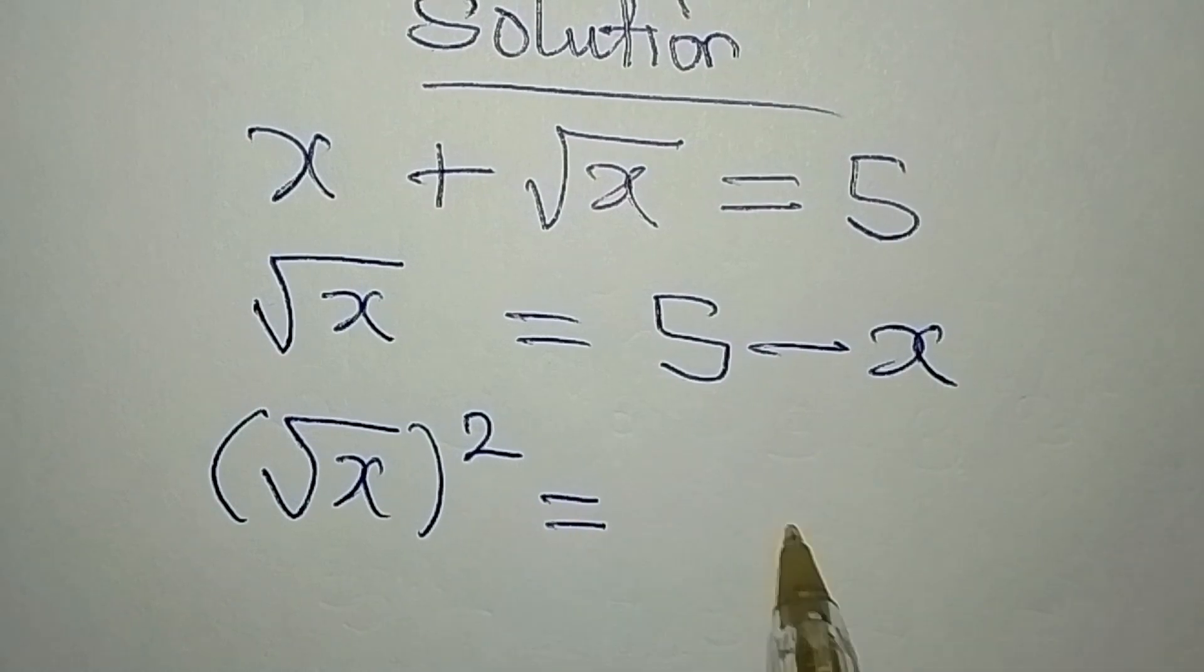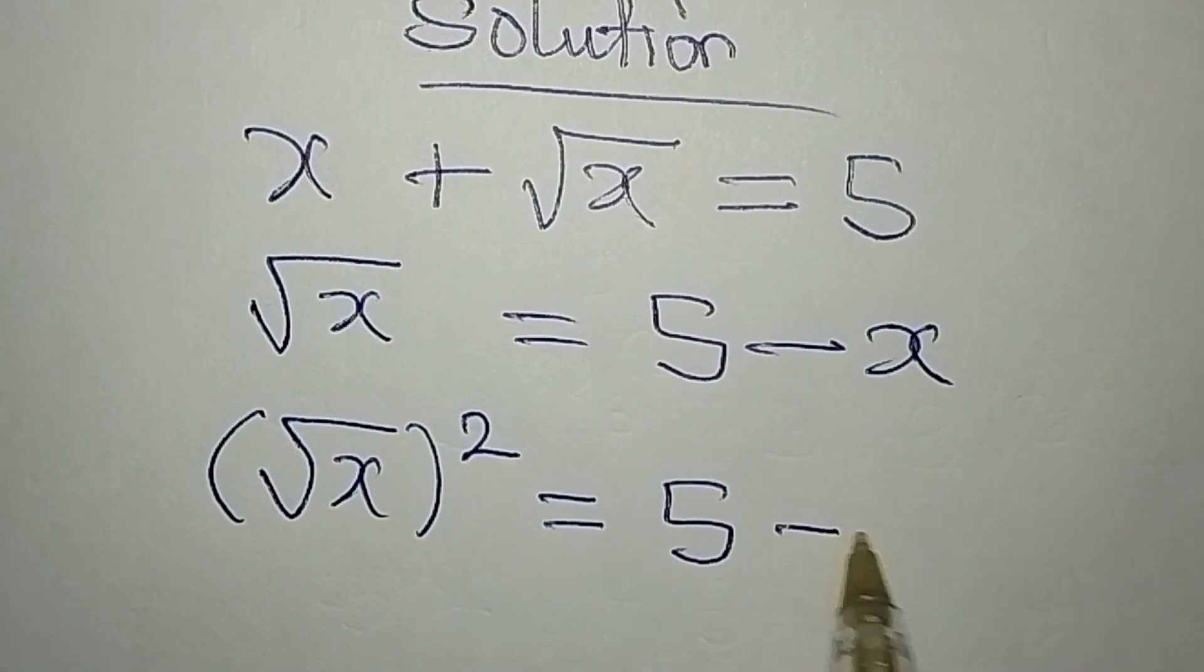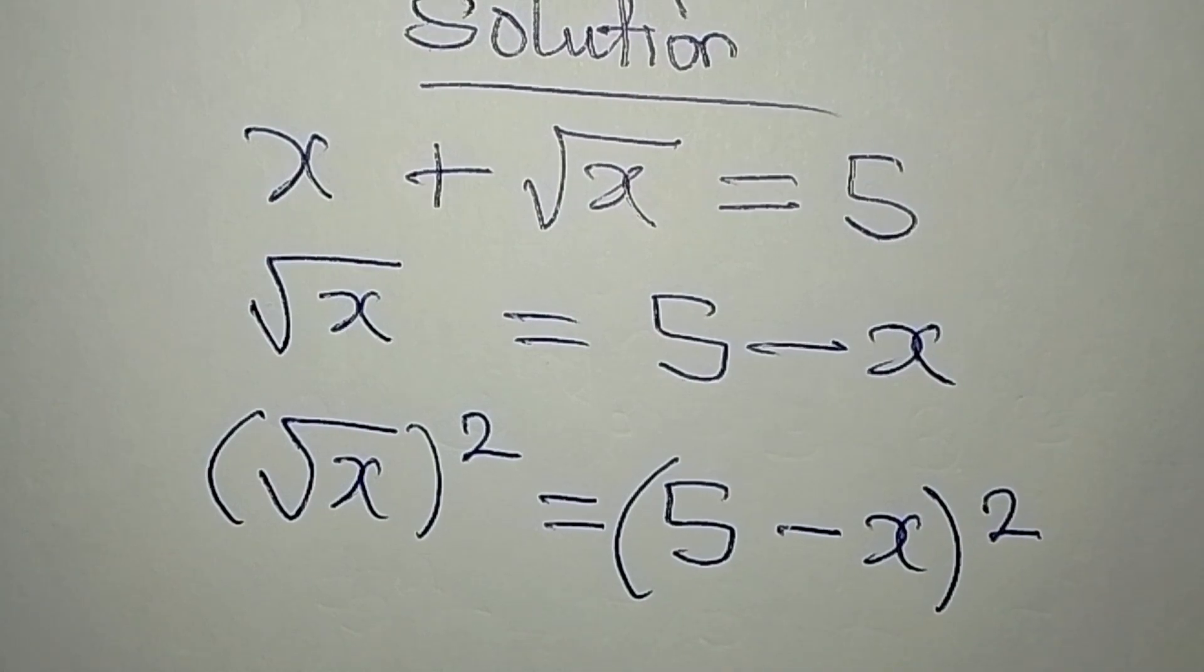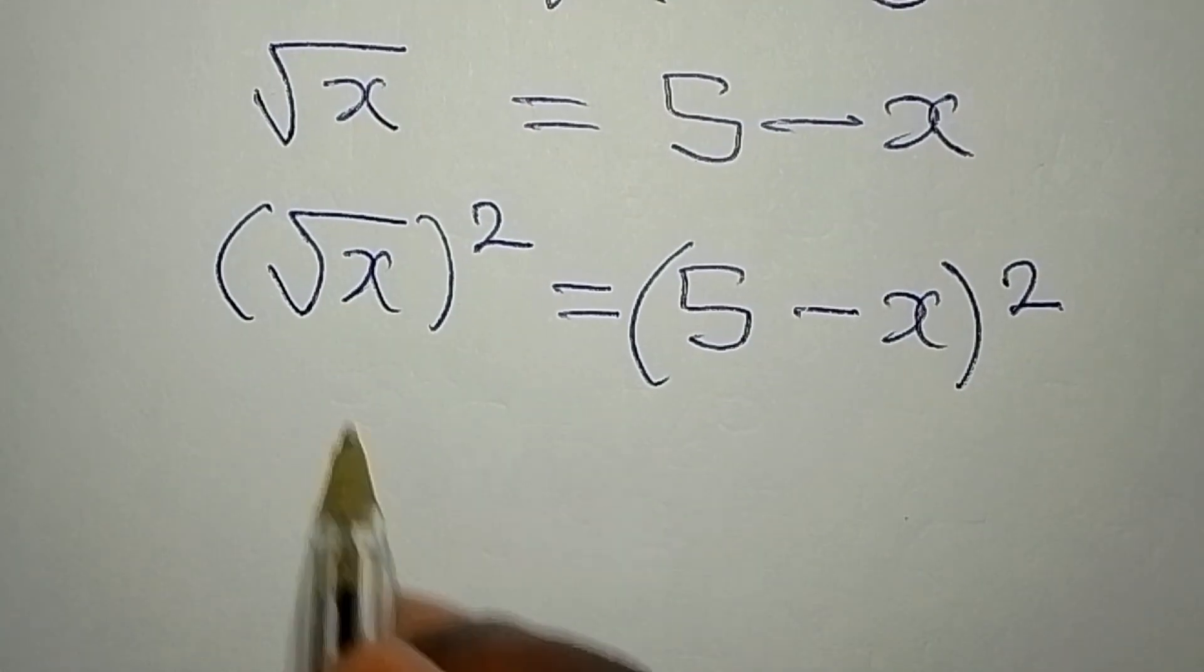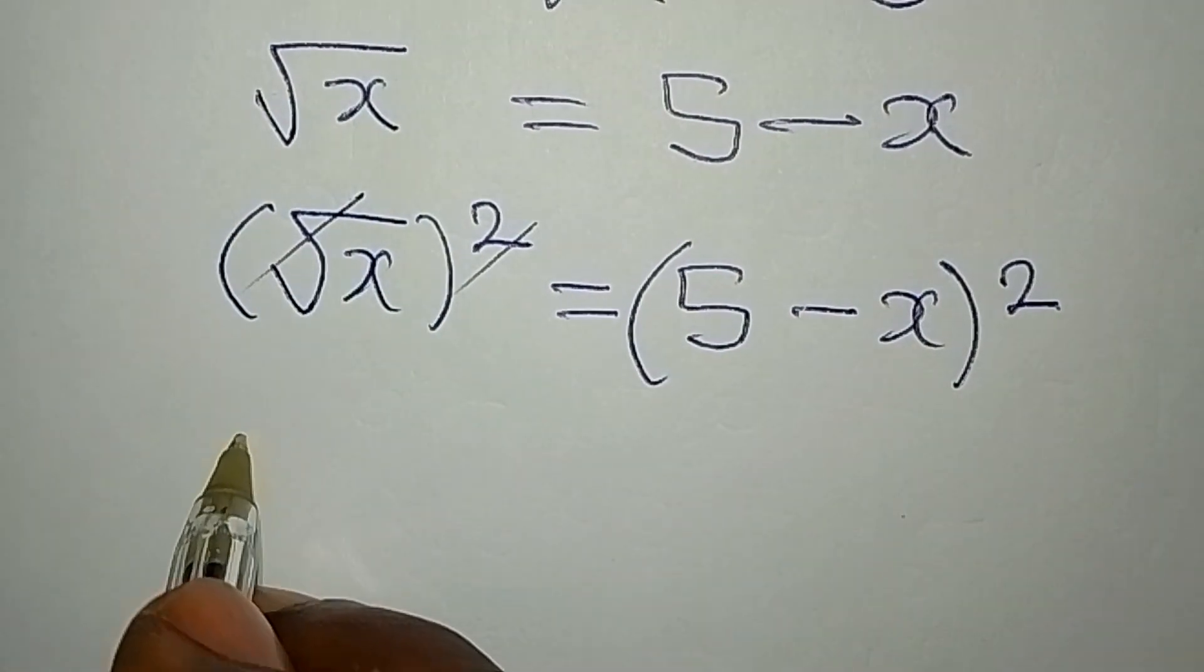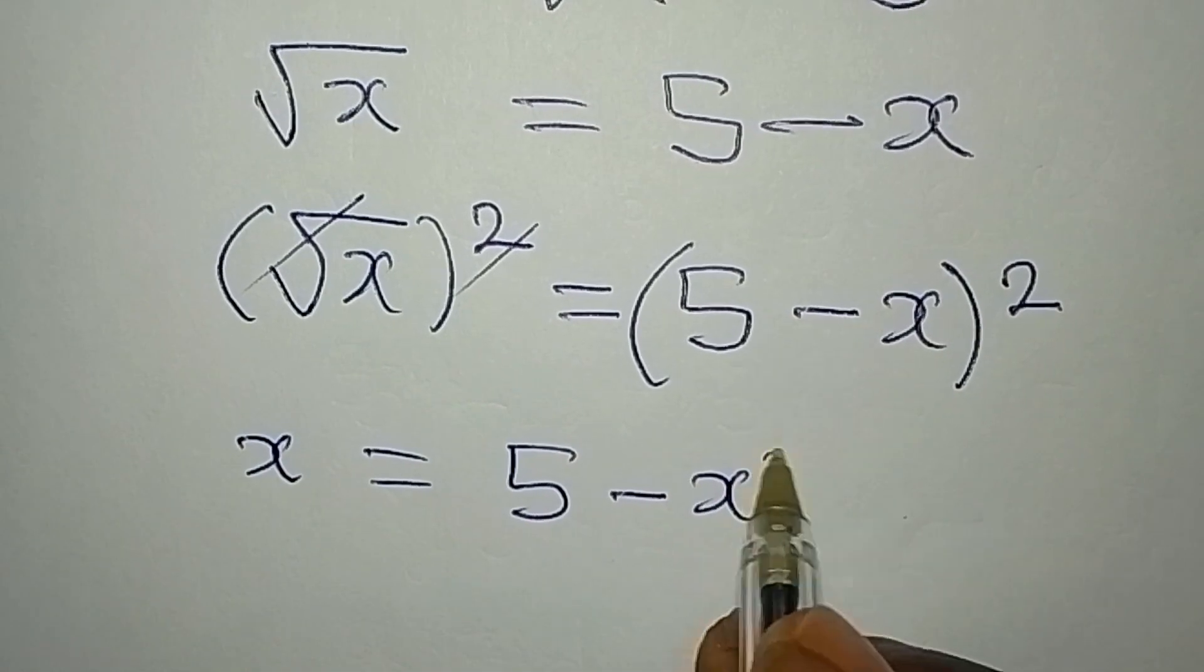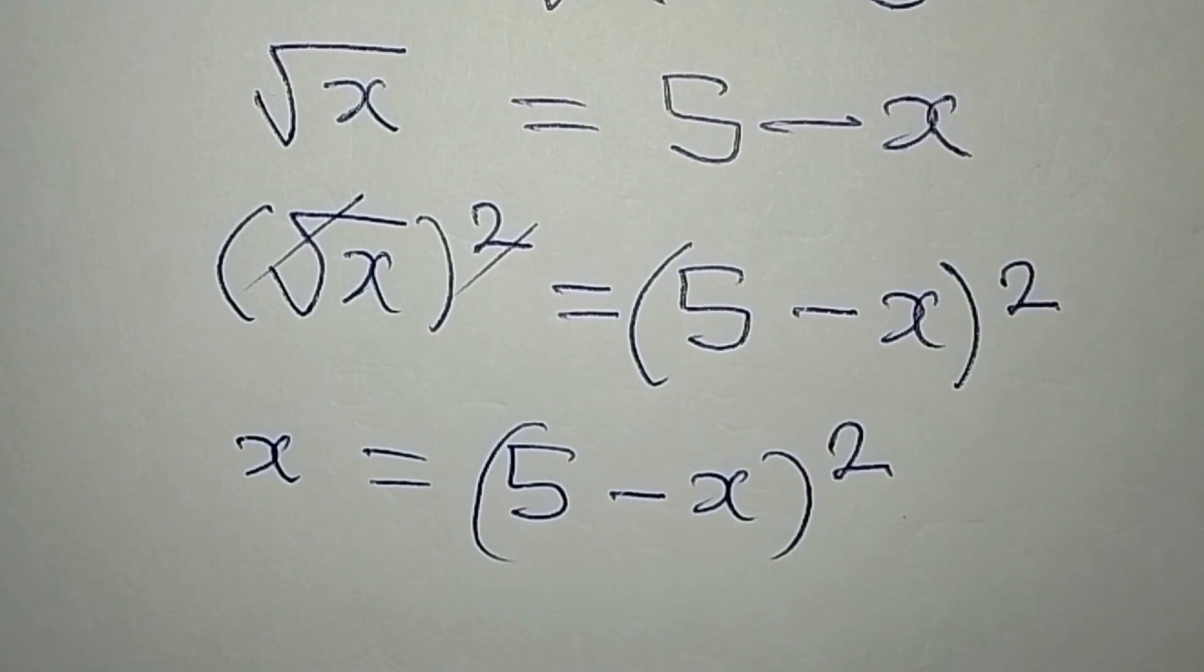And this will be equal to 5 minus x to the power of 2. Now this will go with this, x will now be equal to 5 minus x to the power of 2.